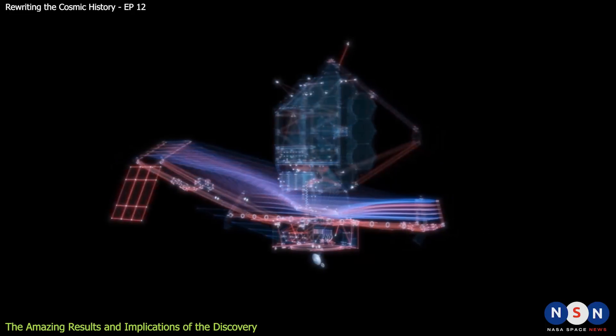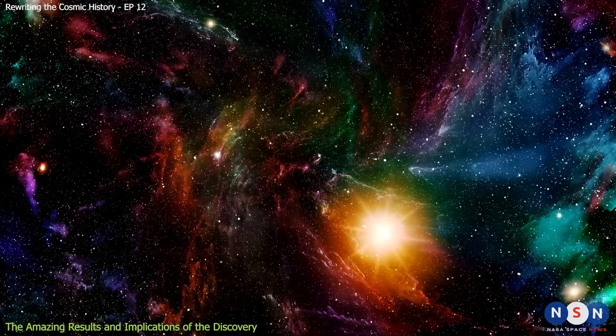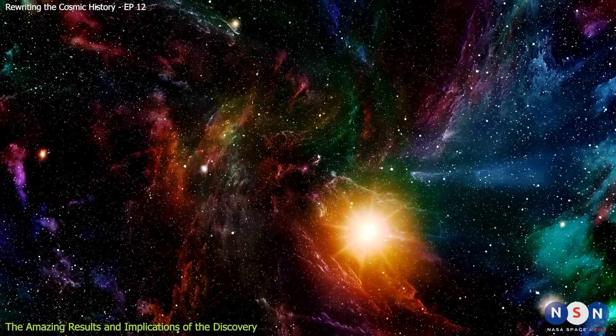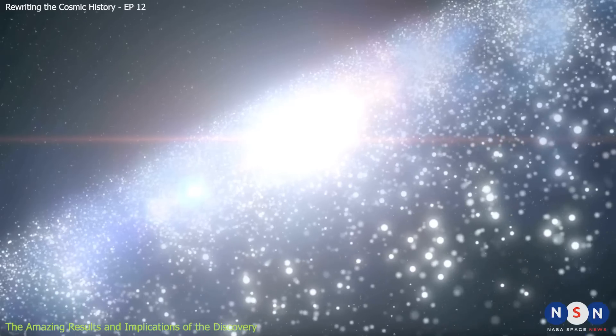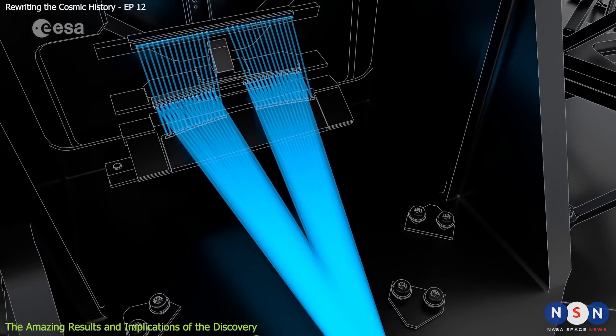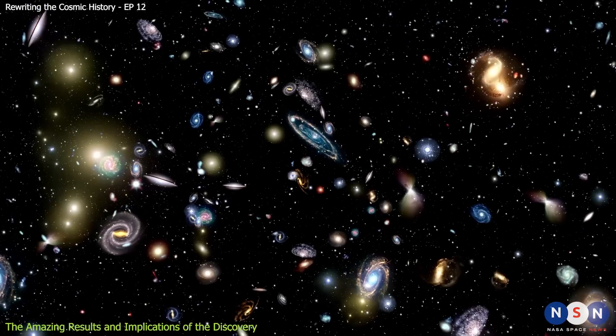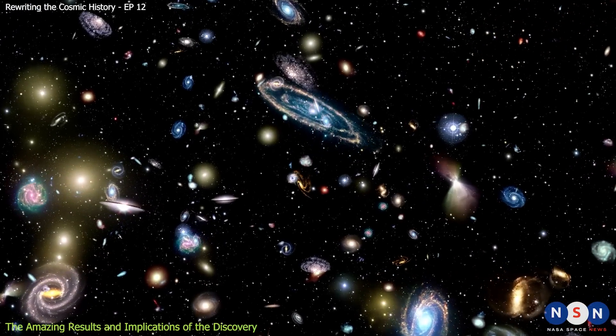Second, MIRI had to deal with a lot of noise and contamination in the data. Noise is any unwanted signal that makes it hard to see the true signal. Contamination is any signal that comes from other sources than the target galaxy. For example, noise can come from cosmic rays, detector problems, or background changes. Contamination can come from nearby stars or galaxies, or from other emission lines.